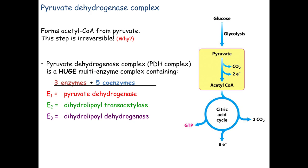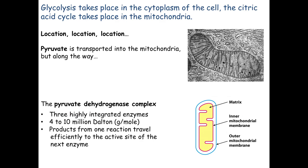We're going to start with pyruvate at the top and turn it into our acetyl group on acetyl-CoA. But this complex is located in a membrane, and it matters which membrane. Glycolysis took place in the cytoplasm — the big bulk solvent in the cell — where glucose was turned into a pair of pyruvates. The citric acid cycle, however, takes place in the matrix of the mitochondria.